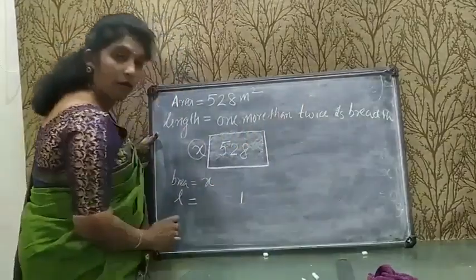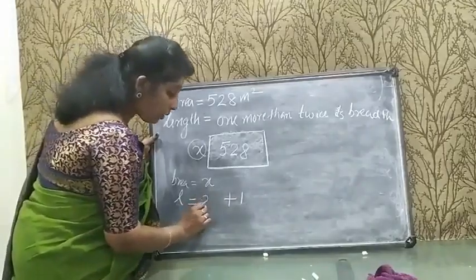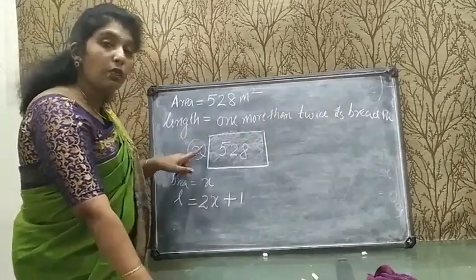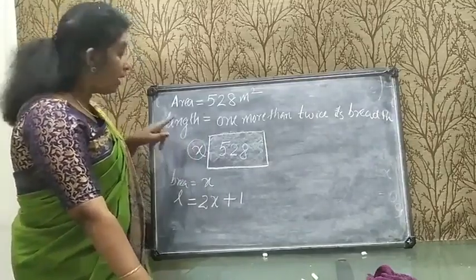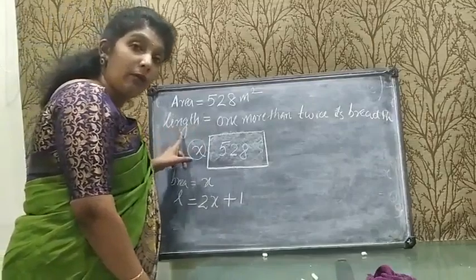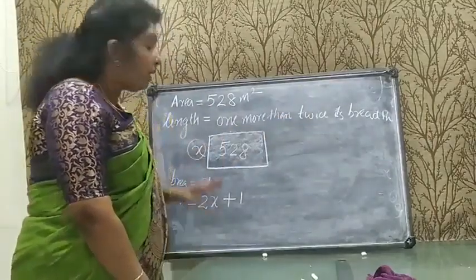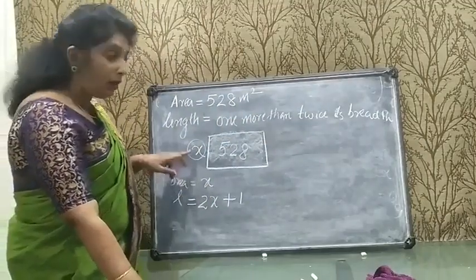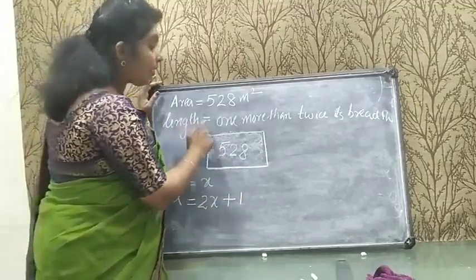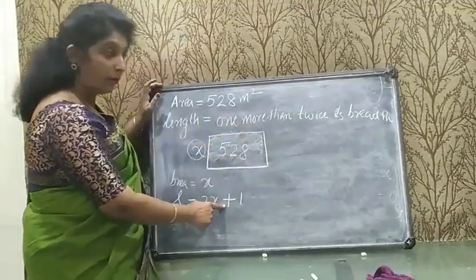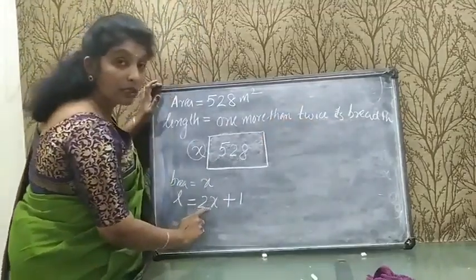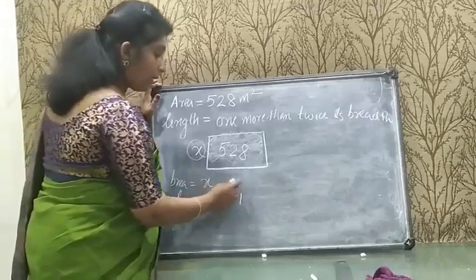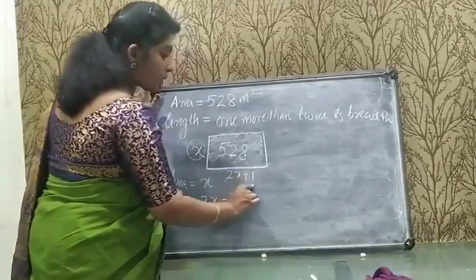1 more than twice means 2 times breadth plus 1. I assume the breadth of the rectangular garden as x, because the length will be derived from the breadth according to the given condition. So the length is 2x + 1 and the breadth is x.